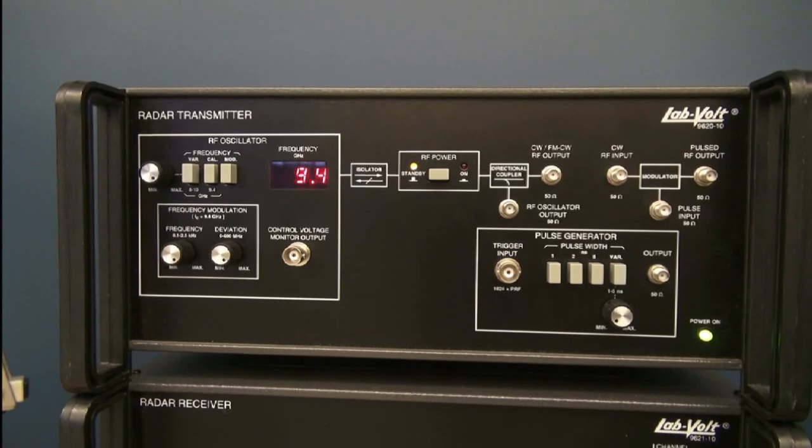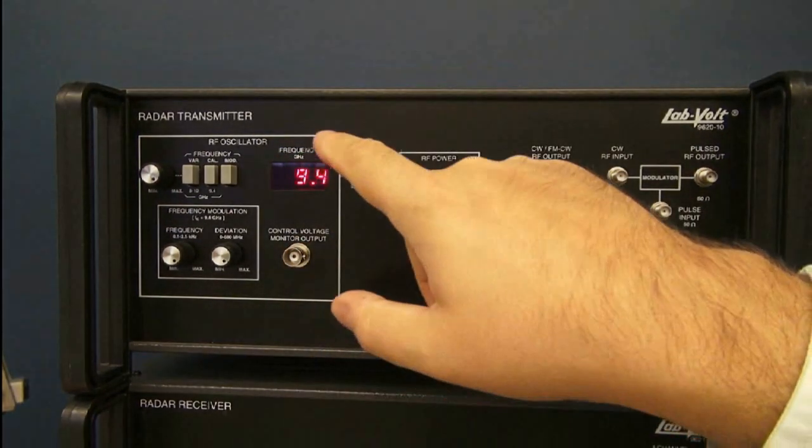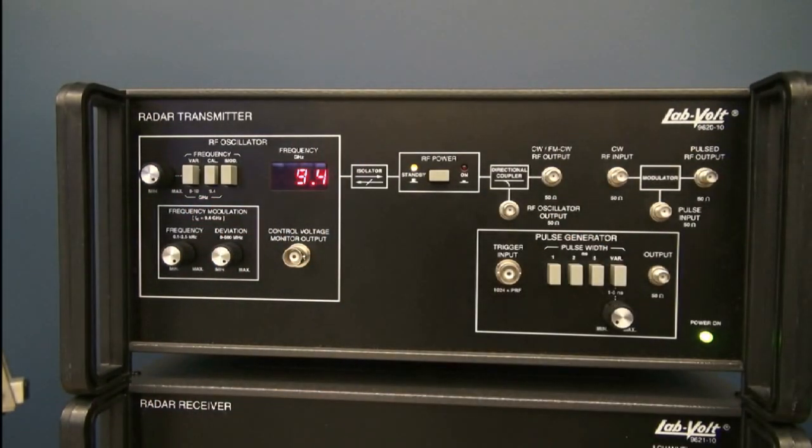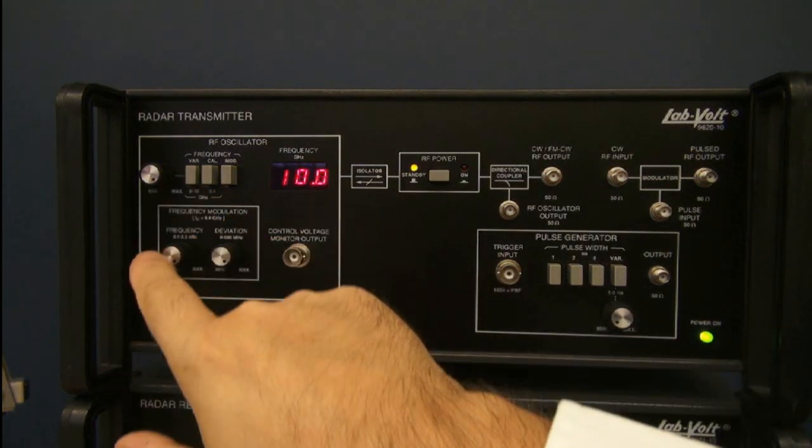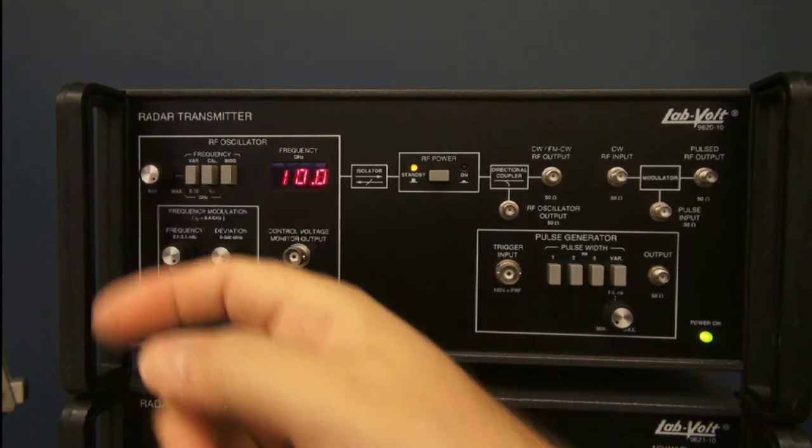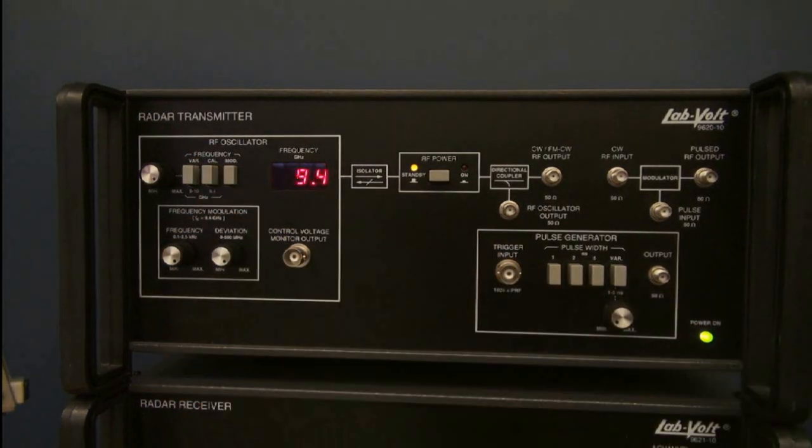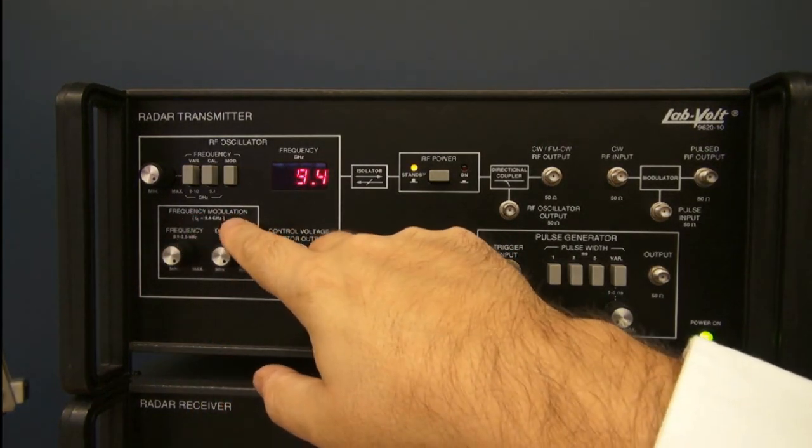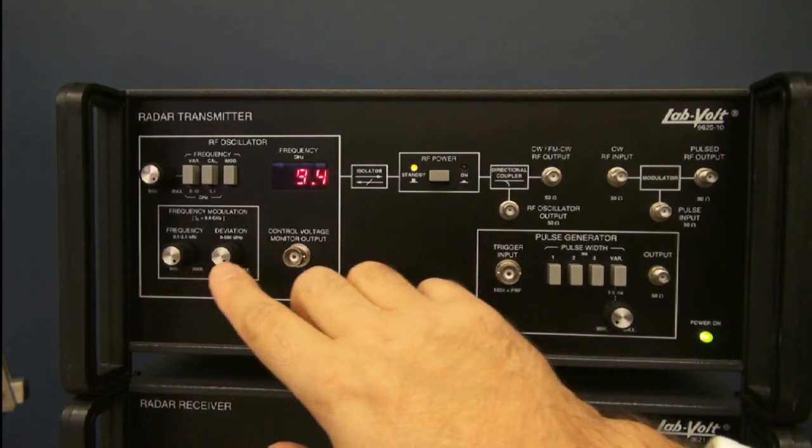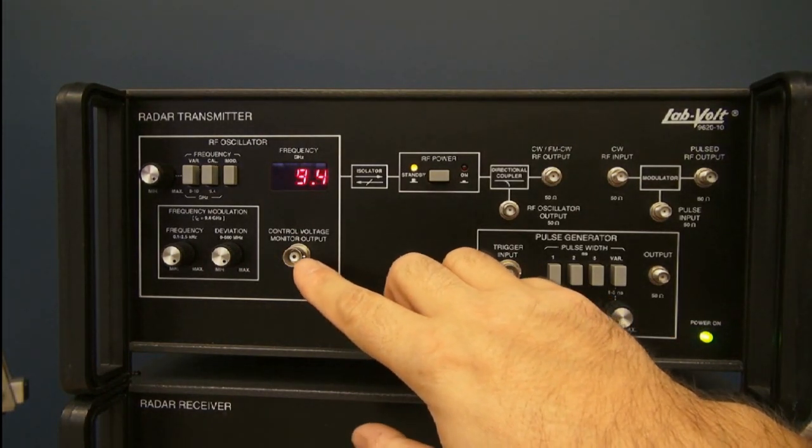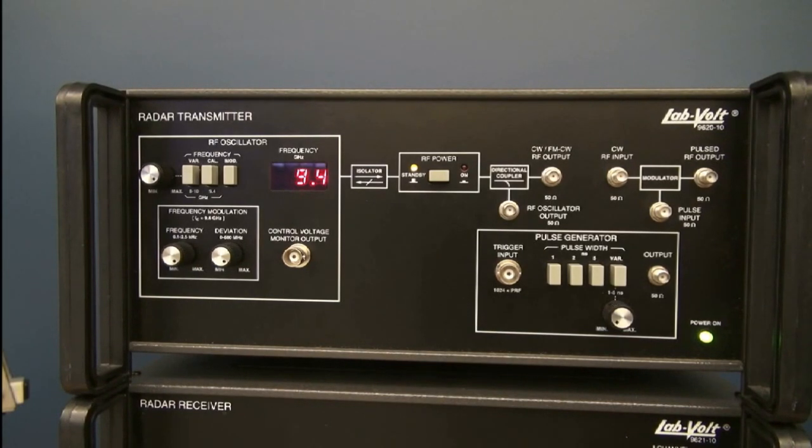The first module on the top is the radar transmitter. It has an RF oscillator that works at a calibrated frequency of 9.4 GHz in the X-band, but you can also change the frequency by selecting the variable function anywhere between 8 and 10 GHz. It's also possible to use frequency modulation. In that case, you have control around the carrier frequency of 9.4 GHz for your frequency and deviation of the carrier frequency. It also has a control voltage monitor output, so you can see what the actual frequency is using a regular oscilloscope or multimeter.